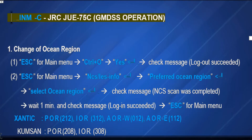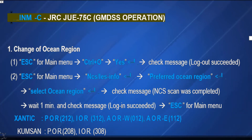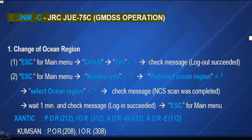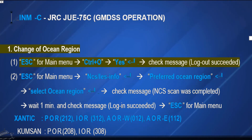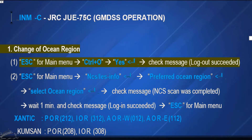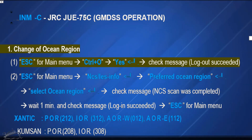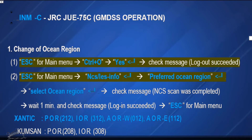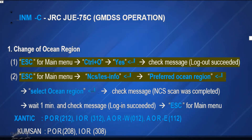How to use Inmarsat-C. JRC JUE-75C GMD-SS. Operation 1: Change of ocean region. Escape for main menu. Control plus O, yes, then enter. Check message: logout succeeded. Escape for main menu. NCS.